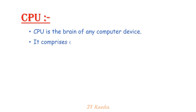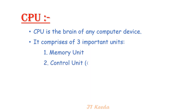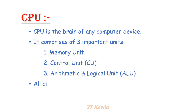The three units of the CPU are: 1. Memory unit, 2. Control unit (CU), 3. Arithmetic and logical unit (ALU). All three units of the CPU work together to give the correct result in minimum time.